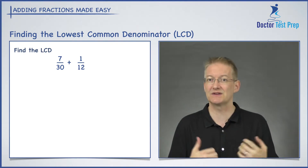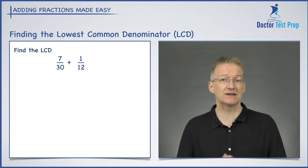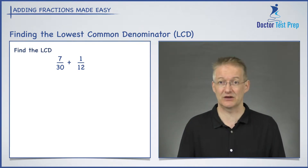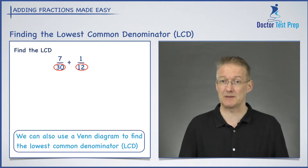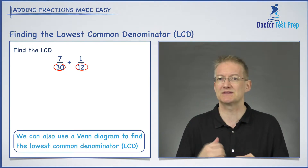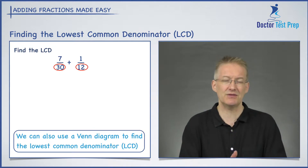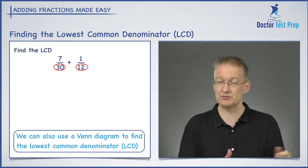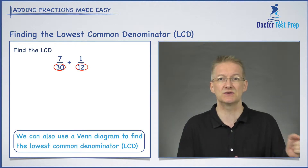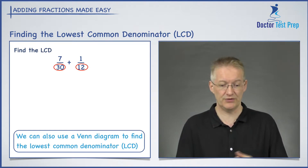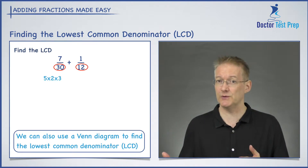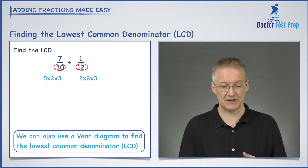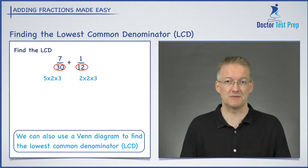Some people really like this method because it gets you there quite quickly. In order to find the lowest common denominator, I like to use Venn diagrams. What I'm going to do is first rewrite 30 in terms of its prime factors. Remember, a prime number is a number that's only divisible by 1 and itself. I can split 30 into 3 times 10. 3 is prime, and 10 splits into 2 times 5, both of which are prime. So 30 equals 5 times 2 times 3. With 12: 12 is 3 times 4, and 4 is 2 times 2, so I have 3 times 2 times 2. So I've rewritten both denominators in terms of their prime factors.